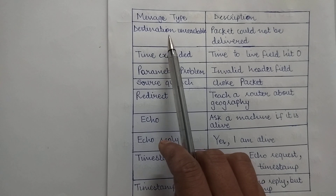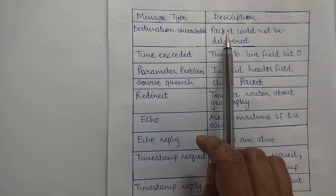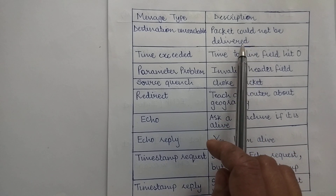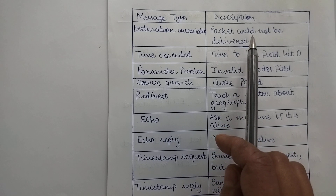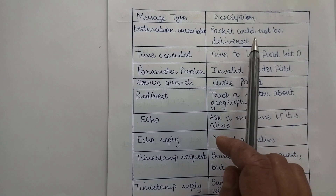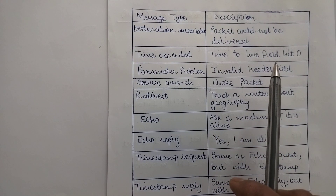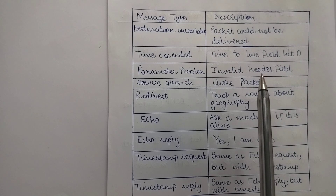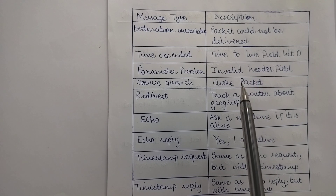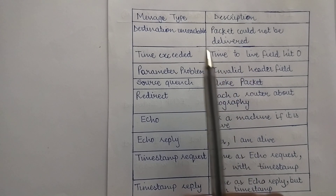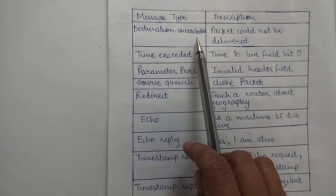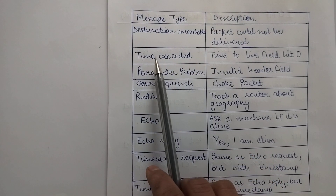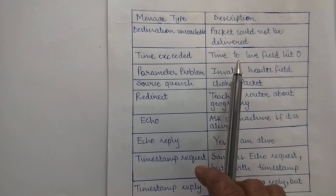The first message type is 'Destination Unreachable.' When an ICMP attaches this message, it means the packet could not be delivered from the source to the intended destination. When a subnet or router cannot locate the destination, or when a packet cannot be delivered because a small packet network stands in the way, this message is used.